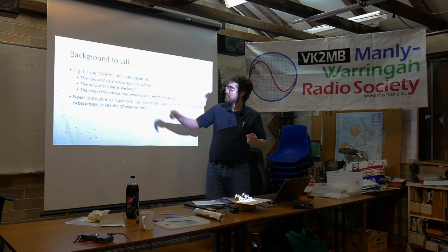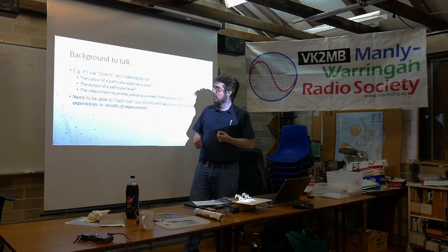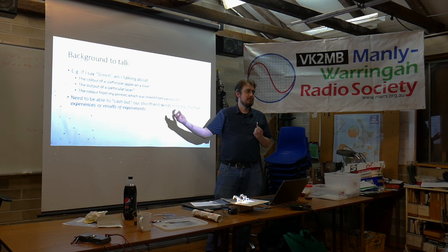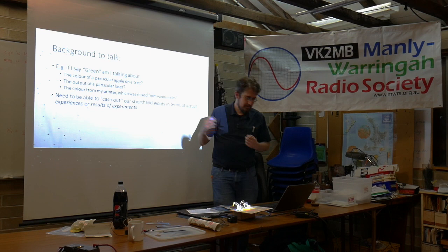If I'm saying 'green,' am I talking about the colour of a particular apple on a tree, the output of a particular laser, or the colour from my printer — which is mixed from three different inks and so isn't necessarily a true colour? The idea I want to get across is to cash out shorthand words like 'colour' in terms of actual experiences or the results of experiments.